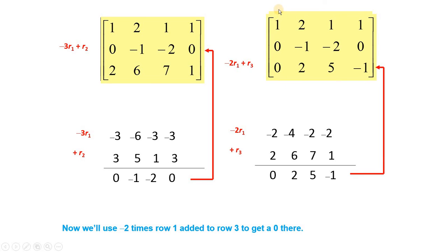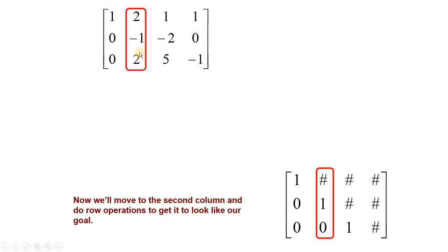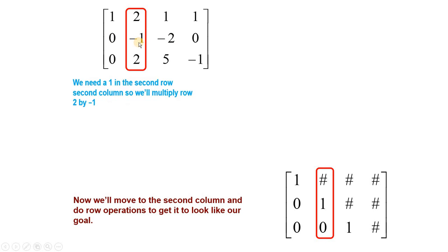اب ہمارا جو goal تھا — one, zero, zero حاصل کرنا تھا — اب یہاں پہ حاصل ہو گیا۔ Now next we will work upon the second column. یہاں پہ plus one لانا ہے اور یہاں پہ zero لانا ہوگا۔ اسی کو plus one بنانے کے لئے: multiplying r2 by negative sign — minus times r2 will make this minus one into plus one.